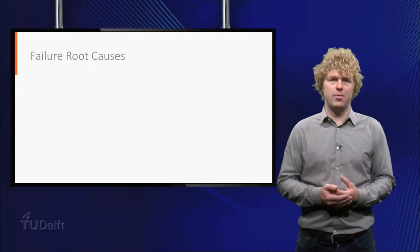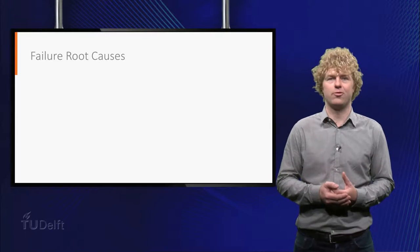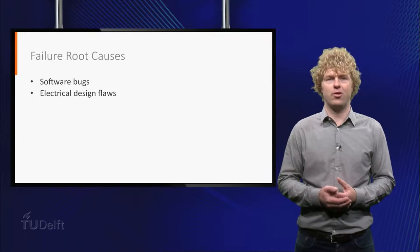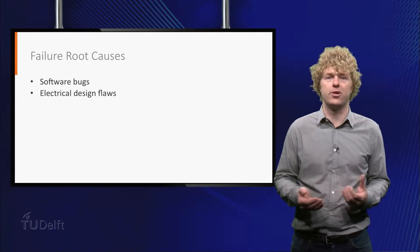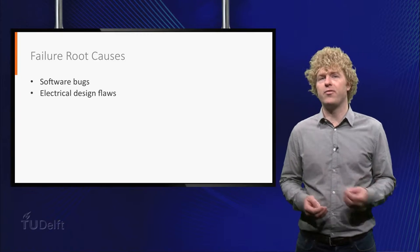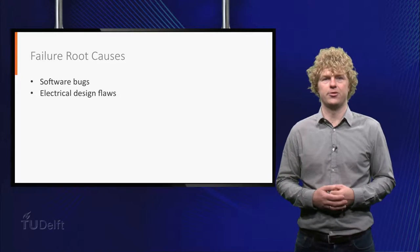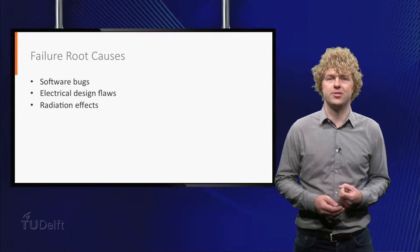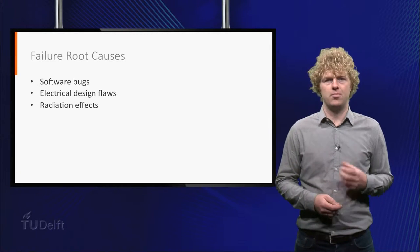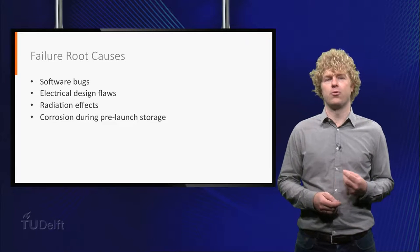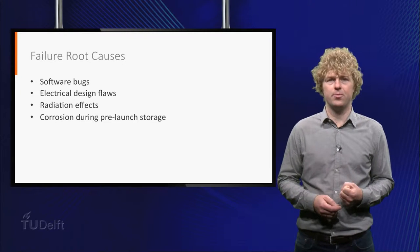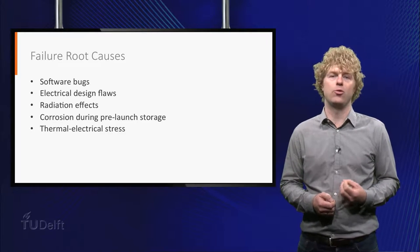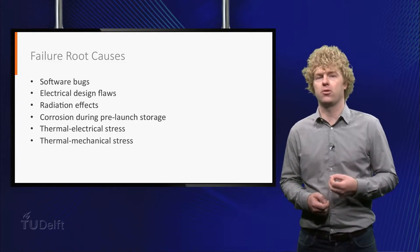So let's first sum up the major failure causes in software and electronics. Software bugs and electrical design flaws are human errors which speak for themselves. They are, however, a major source of on-board failures. Radiation can damage electrical devices — I will elaborate on this later. Before the launch, components can corrode in human environments. In orbit, the extreme thermal environment can lead to thermoelectrical and thermomechanical stresses.